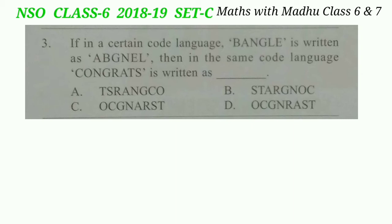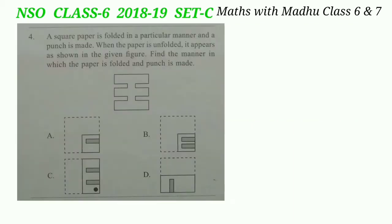In 'bangle', 'ba' is written as 'ab' which is the reverse of 'ba', and 'ng' is written as 'gn' which is also the reverse of 'ng'. Similarly 'le' is written as 'el'. So 'congrats' can be written as 'abochwgnarts', which is option C.